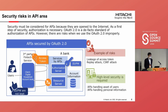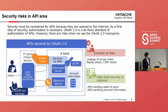Security must be considered for APIs because APIs are open to the internet. As a first step of security, authorization is necessary. For authorization, OAuth 2.0 is a de facto standard, and it is very widely used to secure APIs. This figure shows how to secure APIs by OAuth 2.0. In this example, a bank is opening its API to third-party fintech services, such as a household account book client application. First, users of this client application access the authorization server at the bank.